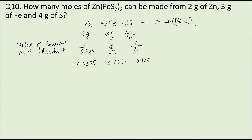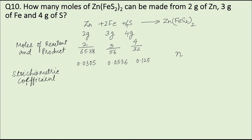Let the number of moles of Zn(FeS₂)₂ be N. The stoichiometric coefficient of zinc is 1, iron is 2, and sulfur is 4.